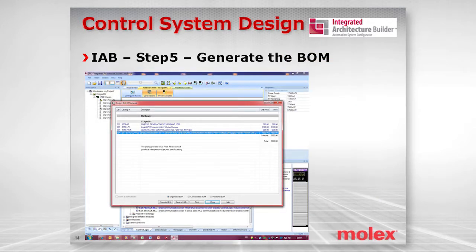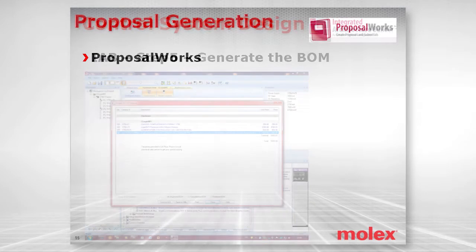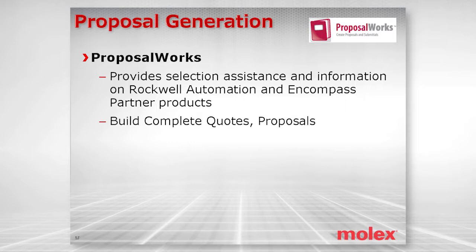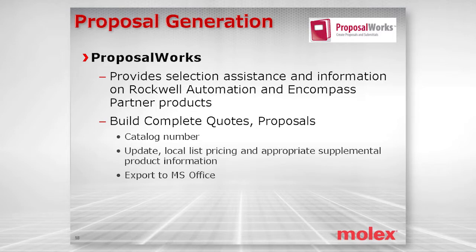The next step is generating the bill of material. It provides selection assistance with drop-down lists and radio buttons to select the products you need, and allows you to build complete quotes and proposals including catalog numbers, part numbers, product descriptions, pricing, and supplemental information like data sheets. It also allows you to export to Microsoft Excel.